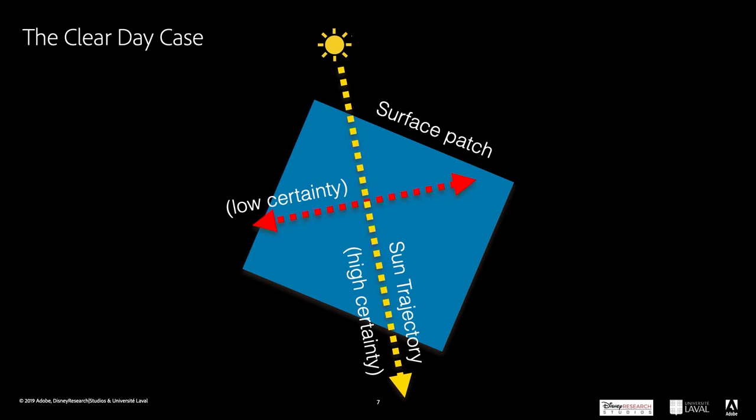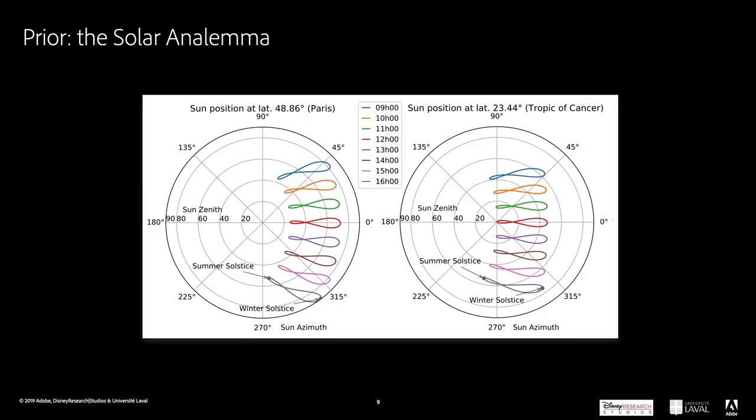However, in this case there is still some signal that can be recovered. In this work, we go one step further than analysis and ask ourselves the question: how can we solve the problem of outdoor photometric stereo for clear, sunny days? To solve this, our insight is to learn a regularizing prior based on the sun trajectory.